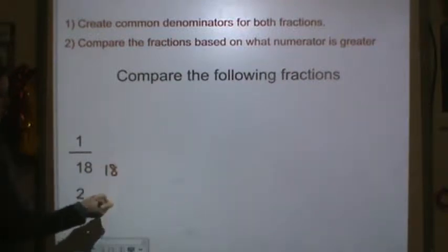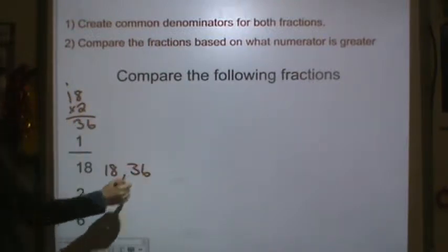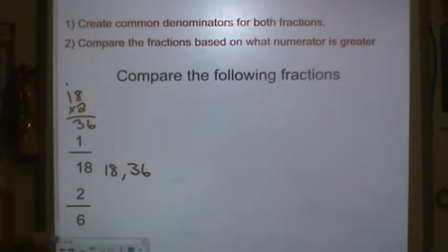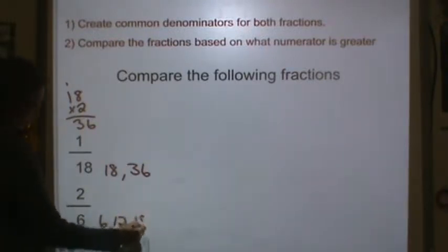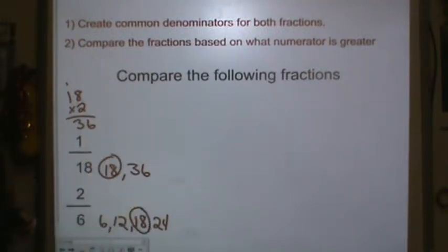So 18, 18 times 2, 36, and I'm going to stop there because I think that I can get one over here. So we've got 6, 12, 18, 24. There's the least common multiple.